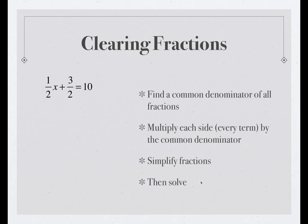If we look at this problem, the fractions are 1/2 and 3/2. The common denominator is 2, obviously because they're both the same. So the first step is done, it's 2. The next step is to multiply each side of the equation by the common denominator. We use parentheses to indicate the distributive property on the left, so we're multiplying 2 times each one of the terms, and 10 times 2 on the right.